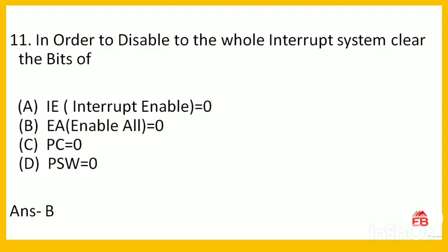Next: in order to disable the whole interrupt system, which bit is cleared? Options are interrupt enable set to 0, enable all set to 0, program counter to 0, or program status word to 0. To disable the entire interrupt system, the enable all bit is set to 0. Option B is correct.